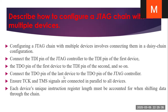Connect the TDO pin of the last device to the TDO pin of the JTAG controller. Ensure that TCK and TMS signals are connected in parallel to all the devices. So TDI and TDO are series connections, while TCK and TMS are parallel connections. Each device has a unique instruction register length that must be accounted for when shifting data through the chain.